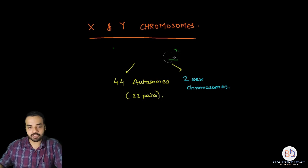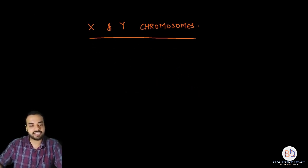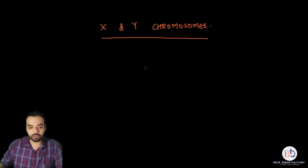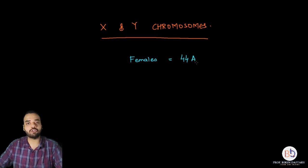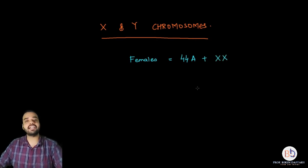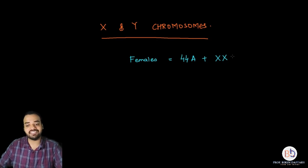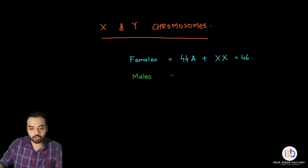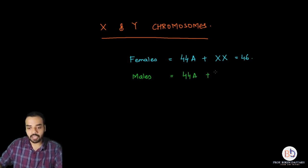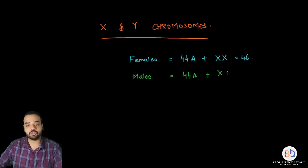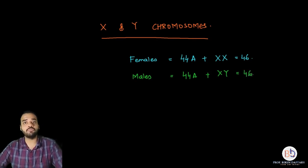In the case of females, both the sex chromosomes are the same. Females have 44 autosomes plus two sex chromosomes which are both X, so we write it as 44A plus XX — that is 46 chromosomes in total. In the case of males, the autosomes are the same, that is 44 autosomes, and both the sex chromosomes are different: one X chromosome and one Y chromosome, again making the total 46.